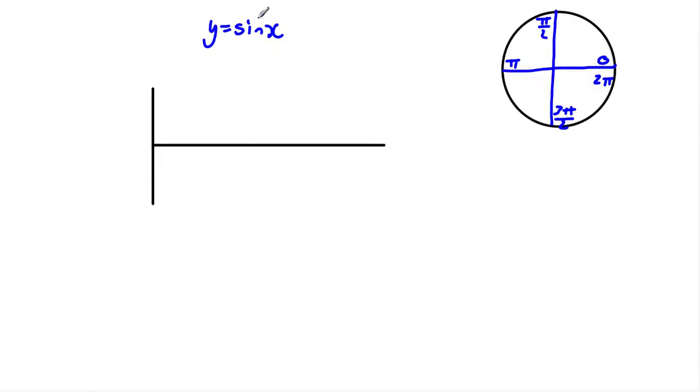Sine is the y value. So sine here is 0, sine here is 1, sine here is 0, sine here is negative 1, and sine again is 0. You can see that these values go between 0, 1, 0, negative 1 in this circle. And that's pretty much what this is. When I graph this, I'm going to have my maximum of 1, my maximum, or my minimum of negative 1.